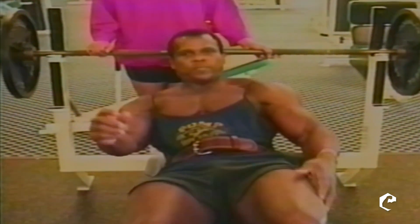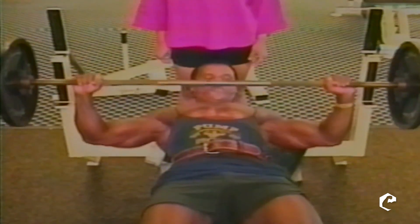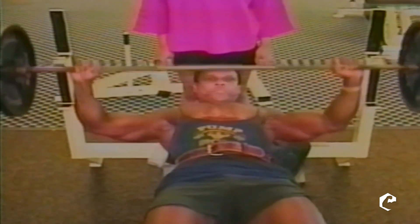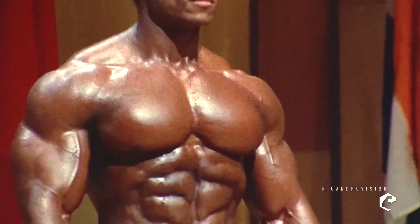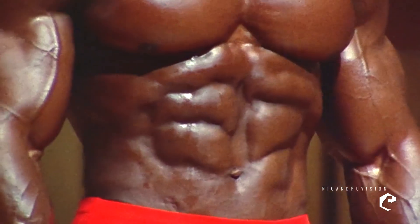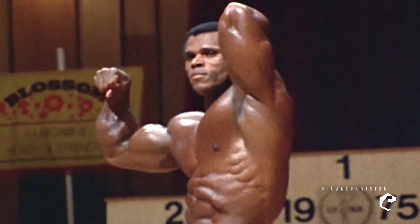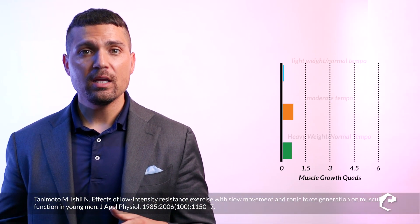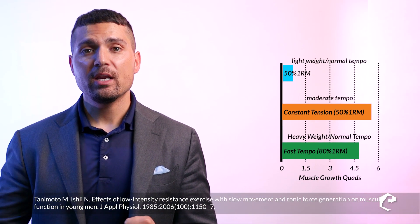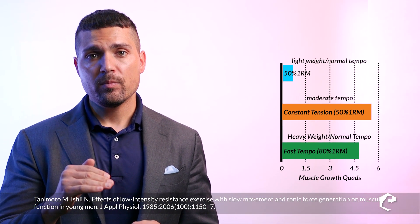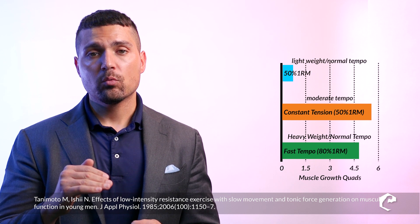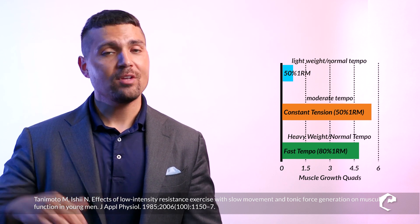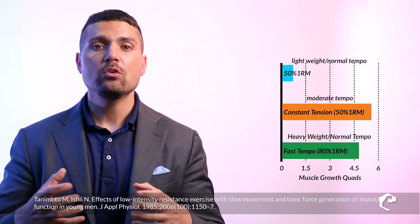Last time we talked about constant tension, we talked about how Serge Nubret was a huge component of it — how it allowed him to use lighter weights but make huge gains in muscle growth. In fact, he had some of the best pecs and upper body of all time. We also talked about a study showing that training at 50% of your 1RM resulted in just as much muscle growth as 80% of your 1RM when using constant tension.